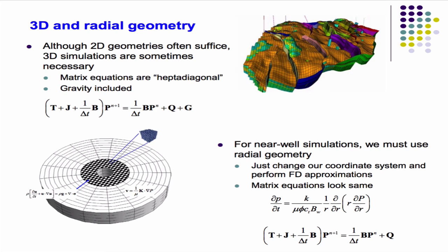In 3D geometry, the main difference is you have to include gravity effects. The structure of the equation is the same, but your T-matrix — instead of being pentadiagonal — is now going to be heptadiagonal, so you have two more off-diagonal entries associated with the third dimension. When we went from 1D to 2D, we went from tridiagonal to pentadiagonal, gaining two off-diagonal entries. Going to 3D, you gain two more. For radial coordinates, you can either discretize the radial diffusivity equation directly, or use a coordinate transformation where r² = x² + y² and solve it in Cartesian coordinates.